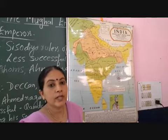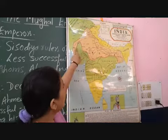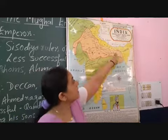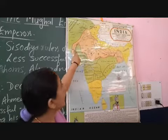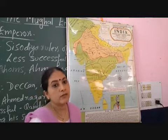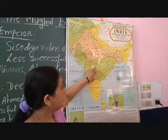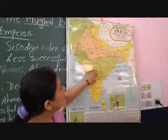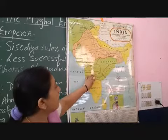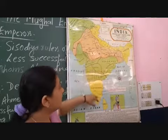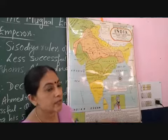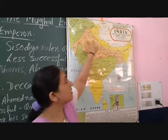But when Sher Shah Suri became the ruler of India, he extended his empire significantly. All this portion which you see is the empire of the Suri dynasty. Till 1555, this was the empire of the Suri dynasty. The green portion and the yellow portion were ruled by other independent kingdoms not under the Mughal Empire. Only this much territory was under Sher Shah Suri.